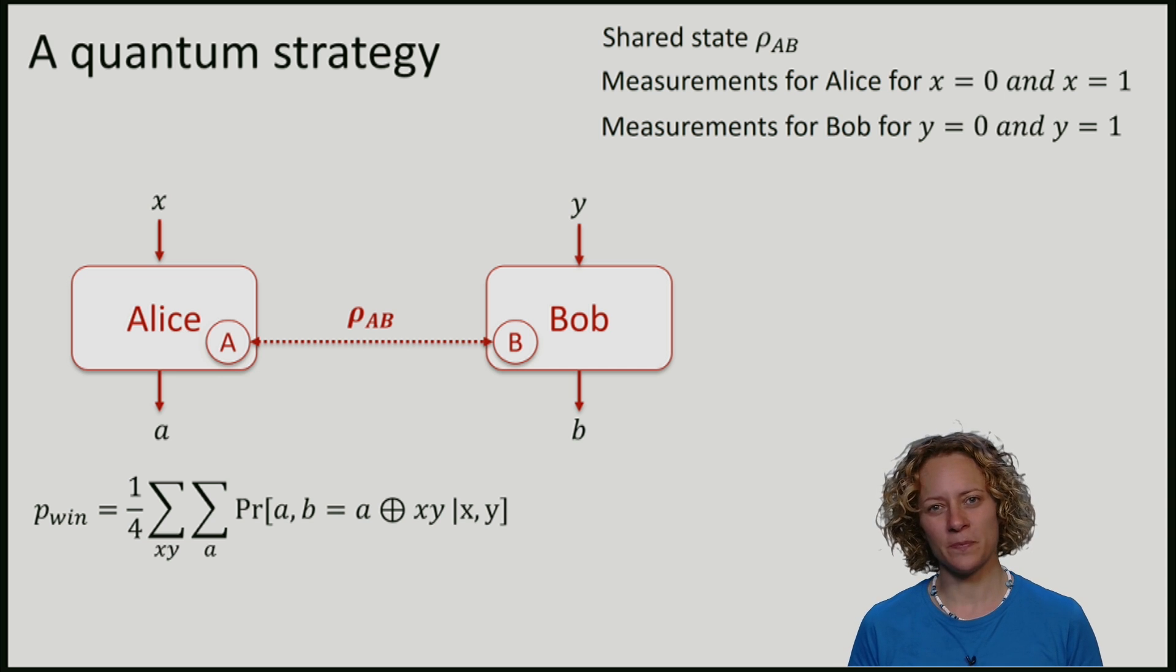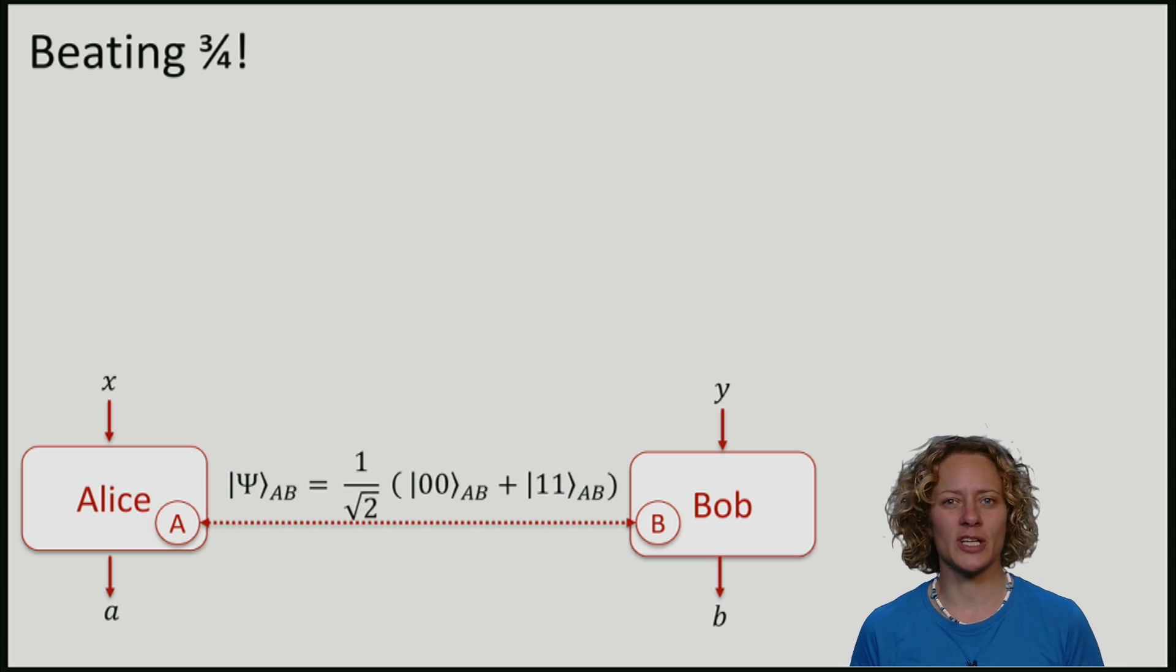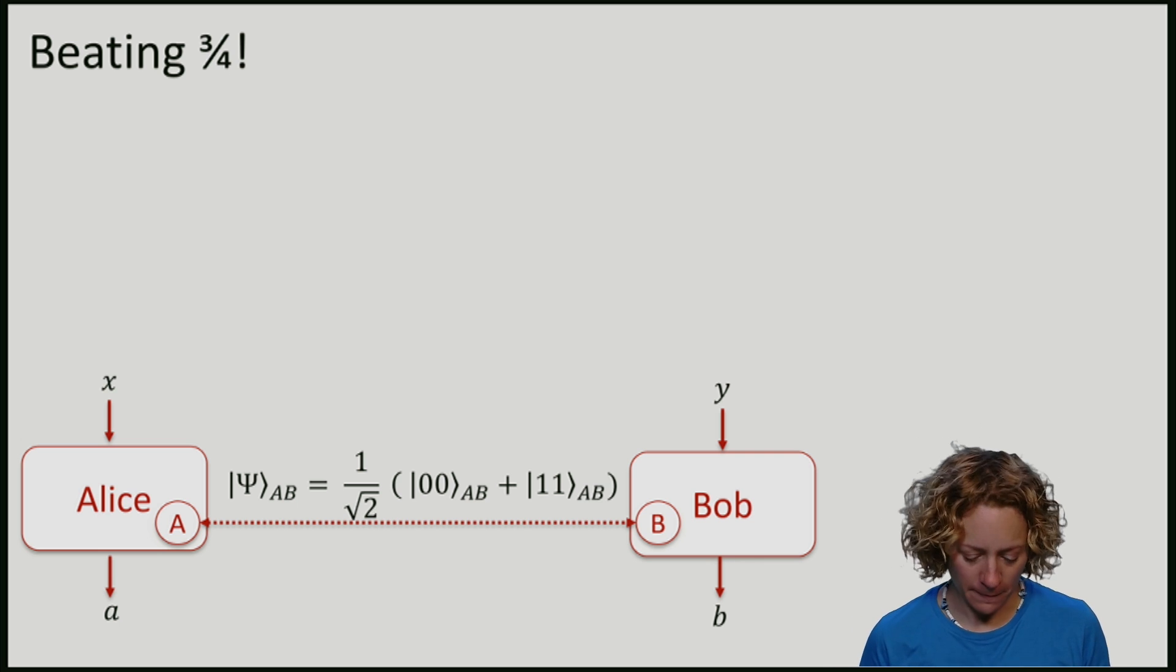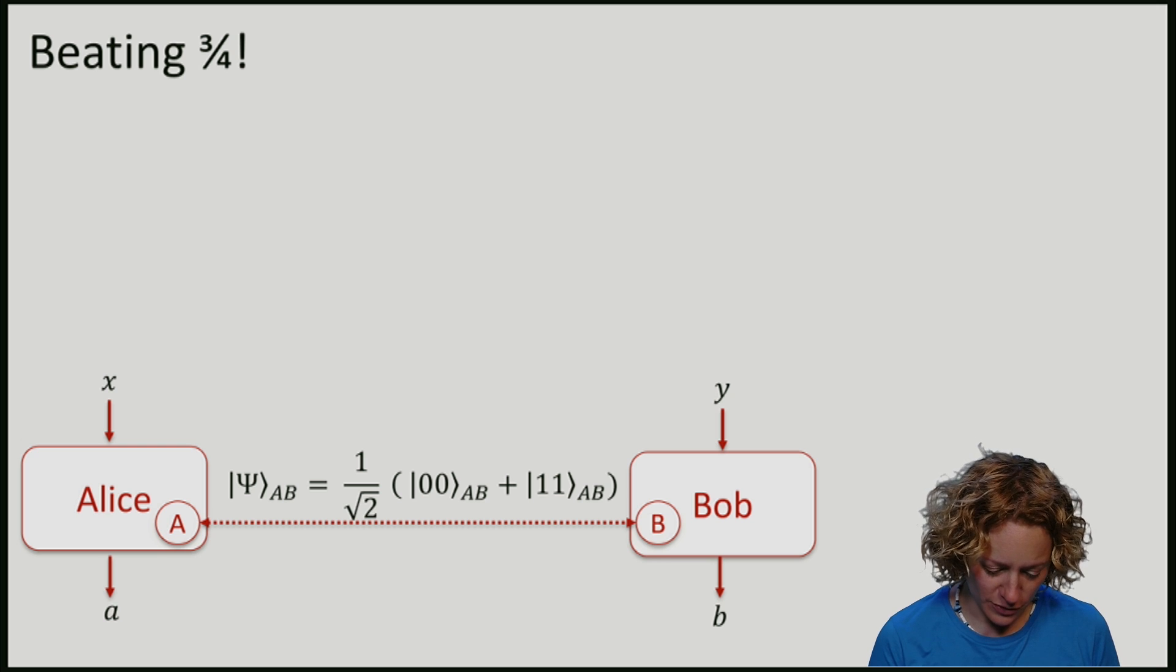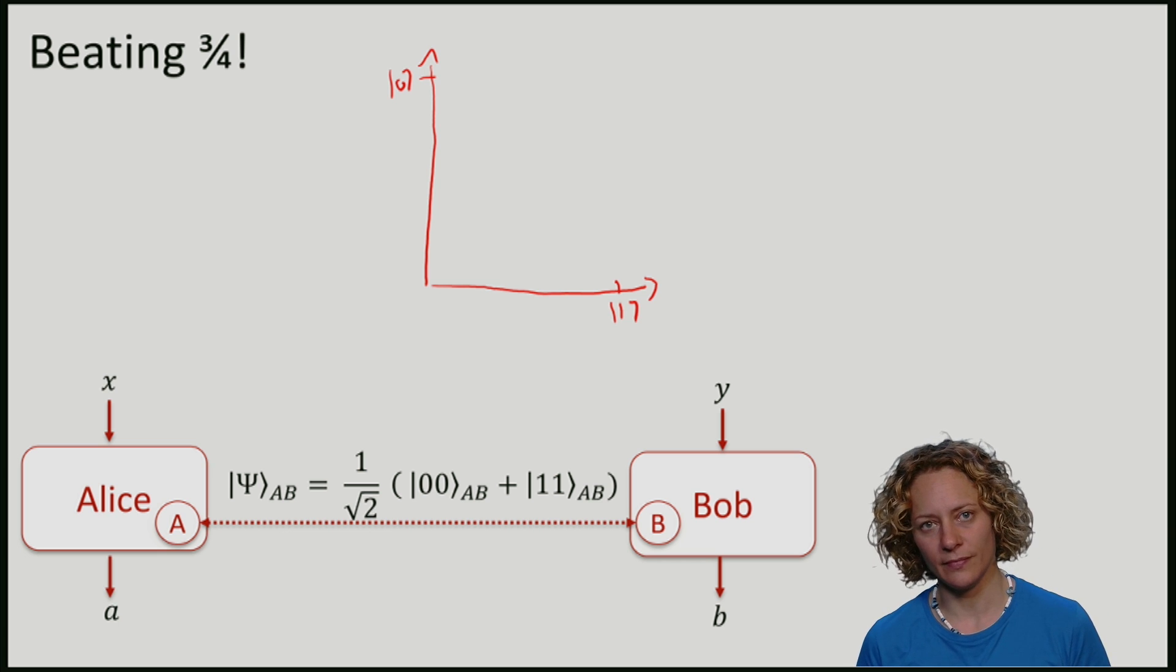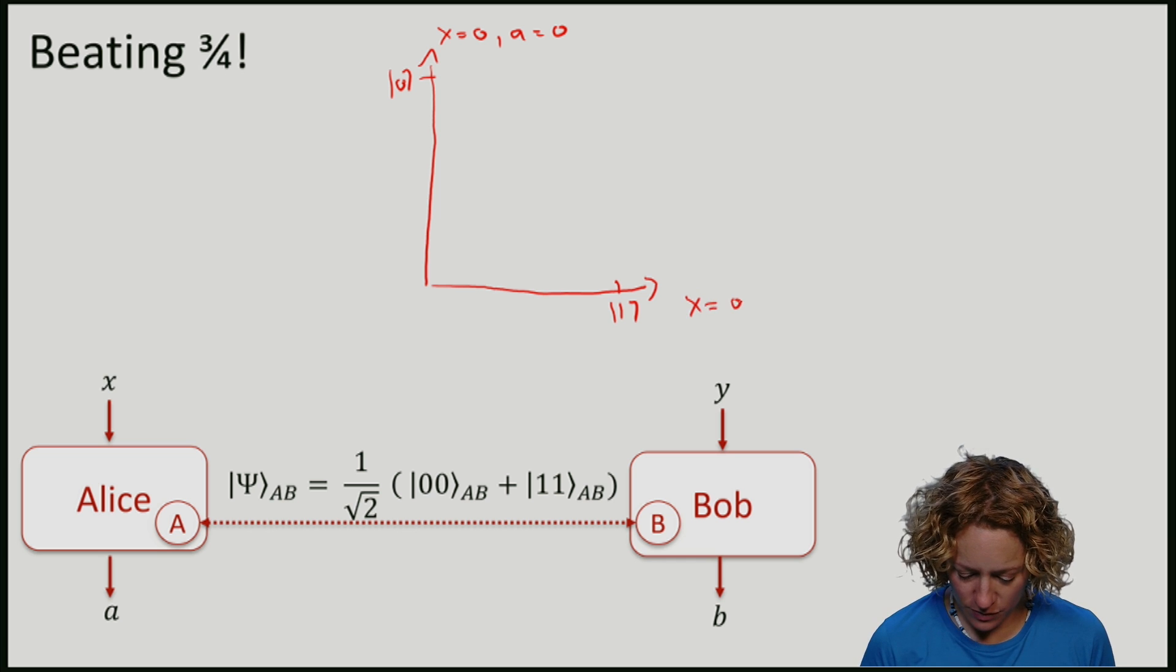Let me now give you a strategy that can do better than the three quarters. Alice and Bob share a state rho AB and the state they're going to share is the EPR pair that you've seen before. The measurements that they're going to make are the following. Alice is going to measure in a basis, and if she gets question x equals zero, the basis that she'll measure in is the standard basis. For convenience, I'll actually this time draw the vector zero in this direction and one in this direction. The orthogonal doesn't really matter. So this vector is associated with x being zero and answer being zero. And again, x being zero and answer being one.